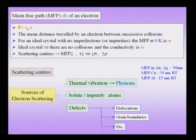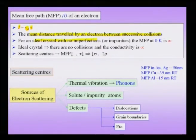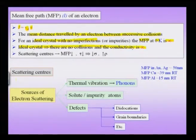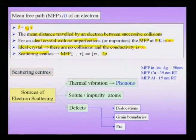The mean free path can be written as the drift velocity multiplied by the average collision time. For an ideal crystal with no imperfections, the mean free path at 0 Kelvin would be infinite — meaning in an ideal crystal there are no collisions and conductivity is infinite, since mean free path and average collision time are directly proportional to conductivity. But scattering centers in the material reduce the mean free path and therefore increase the resistivity.